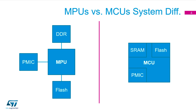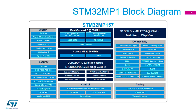Looking at the block diagram for the STM32MP157, the largest member, we have a dual-core Cortex-A7 with Level 1 and Level 2 cache. There's also a separate Cortex-M4 block with its own memory protection unit and floating point unit — a standard Cortex-M4 capable of DSP extended architecture and floating point math. Over on the right we have all the graphics peripherals.